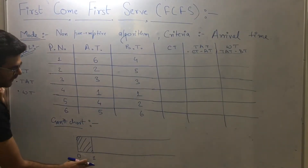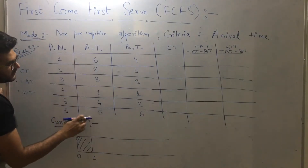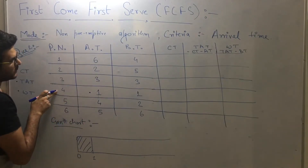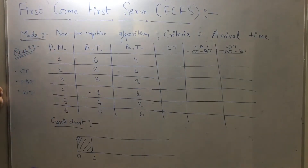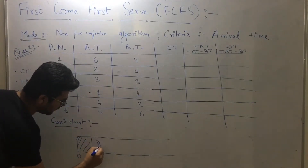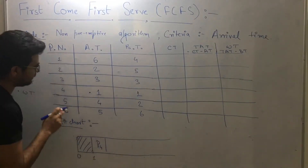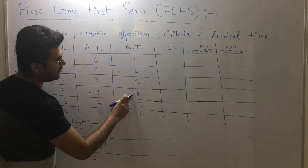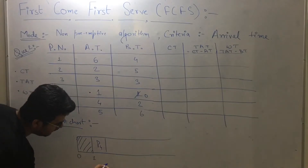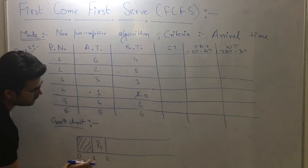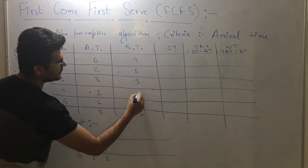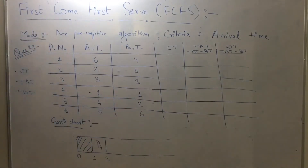Check that at time one, is there any process arriving? Yes, at time one only one process is arriving and its process ID is four. We will schedule process four for one unit of time — it will execute completely. One plus one is two, so process number four is scheduled for one unit of time.